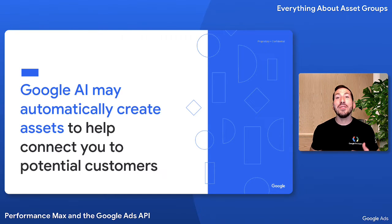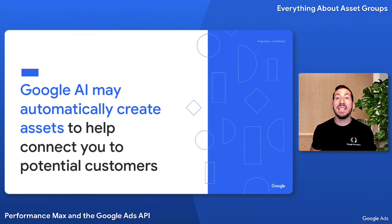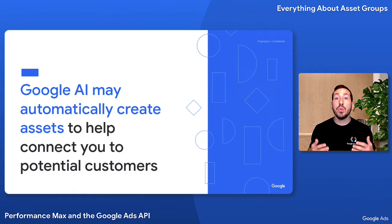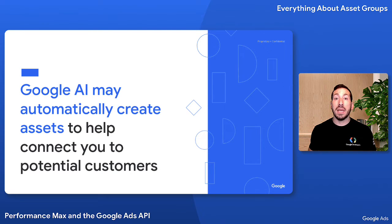These new assets are based on your landing page, domain, and existing ads and creative assets. Performance Max campaigns are opted into automation by default. While it's recommended that you keep this setting turned on to optimize campaign performance, you can opt out using the campaign.assetautomation setting field.